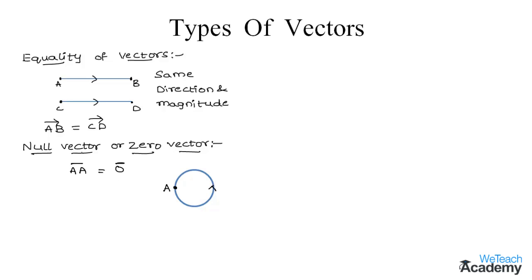So we can see that a vector of the length zero and having any direction is called a zero vector or a null vector, and it is denoted by zero with a bar.